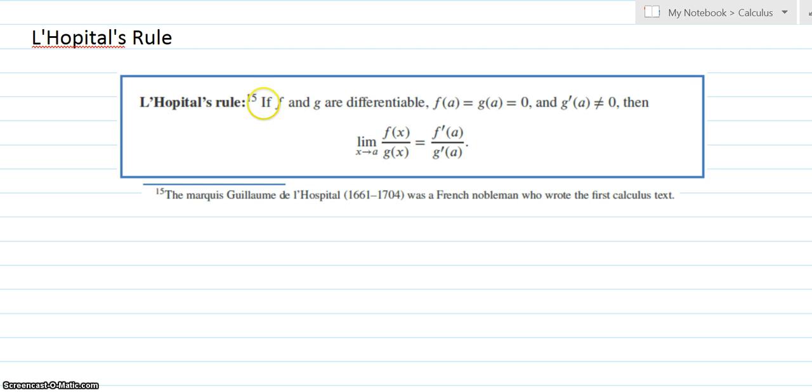There's a more general version as well. If f and g are differentiable, and f(a) equals g(a), which equals 0, that's important, and g'(a) does not equal 0, then you can say that the limit of this quotient f(x) over g(x) is the derivative evaluated at a of the numerator divided by the derivative evaluated at a in the denominator. The next little line here is just where L'Hopital's name came from. It's actually the name of a French nobleman who wrote the first calculus text.